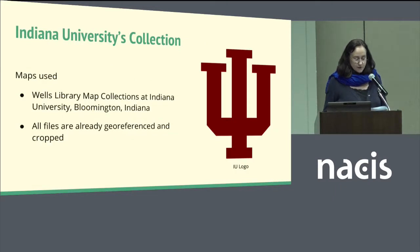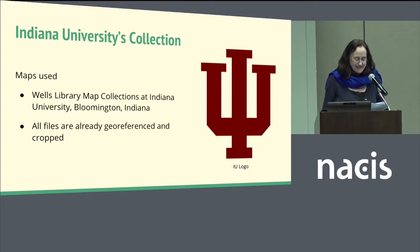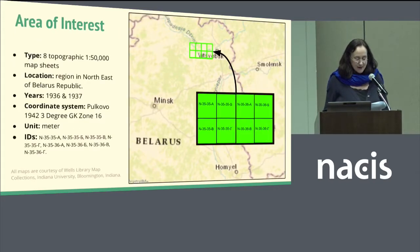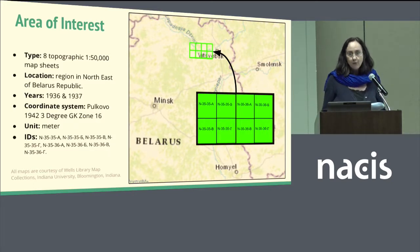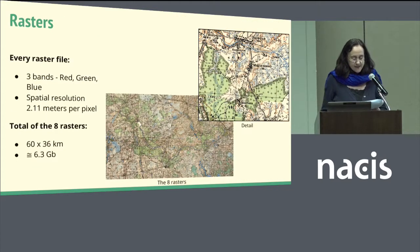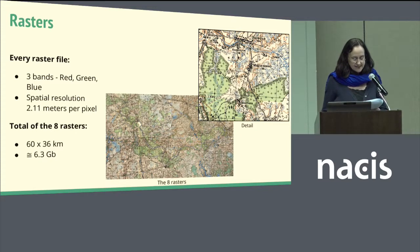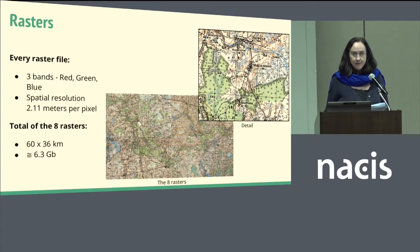The maps I used reside at the Wells Library at Indiana University Bloomington, part of Teresa's collection. They were scanned, georeferenced, and cropped by the library staff there. I chose eight map sheets from a topographic series at a 1 to 50,000 scale. The maps, published in the 1930s, represent a region in the northeast of the Belarus Republic. All rasters have three bands — red, green, and blue — and a spatial resolution of 2.11 meters per pixel, which is pretty high resolution. Together, the eight rasters represent an area of 60 by 36 kilometers.